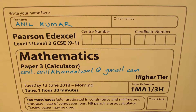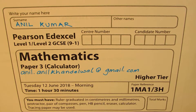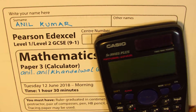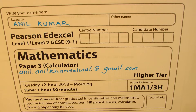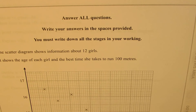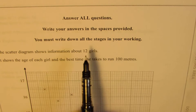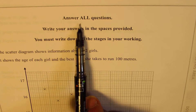I'm Anil Kumar. Welcome to my solutions to GCSE previous papers. Let me thank the organization for sharing all these questions with the public. This is the question paper where a calculator is allowed and there are about 21 questions. We have one hour 30 minutes to solve this. All the questions should be solved using a black pen.